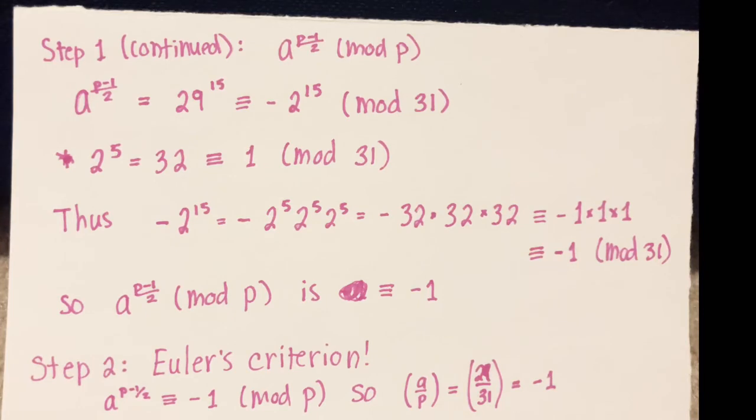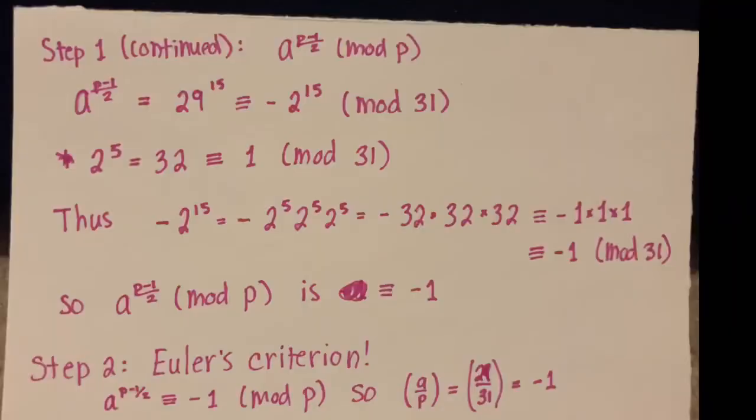So instead of doing 2 to the 15, we're going to break that up into 2 to the 15 is the same as 2 to the 5th times 2 to the 5th times 2 to the 5th, which is equal to 1 times 1 times 1. And then also that negative in front, this ends up being negative 1 mod 31. So we have done this calculation. We've gotten the answer of negative 1.